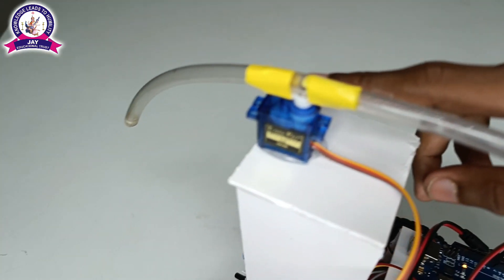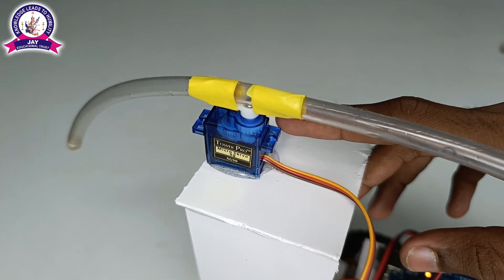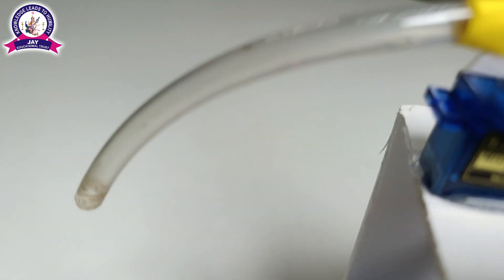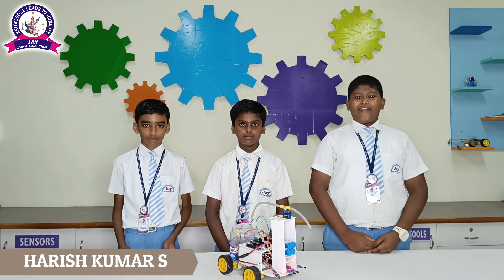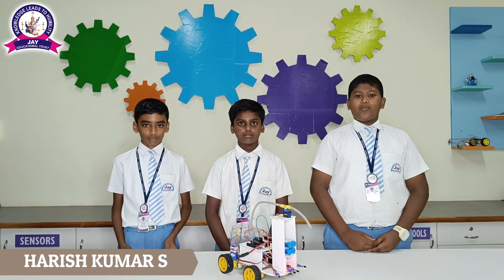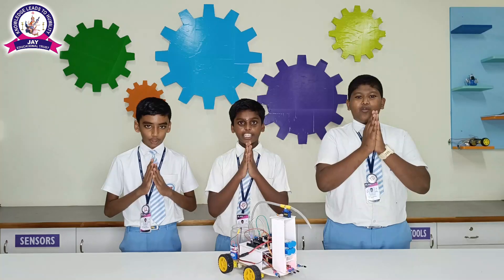This is a servo motor. It is fixed at the top of the robot. It is used to spread water with rotation to put off fire. Thank you. Thank you to our school management for giving this golden opportunity to us. Thank you once again.